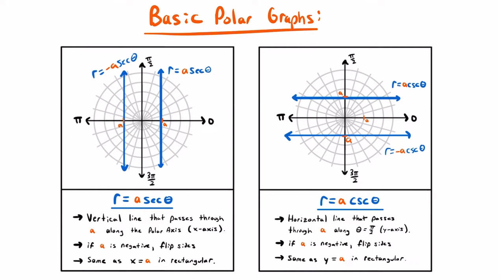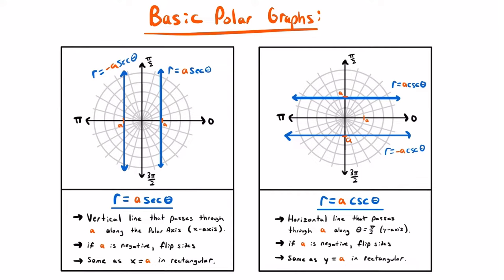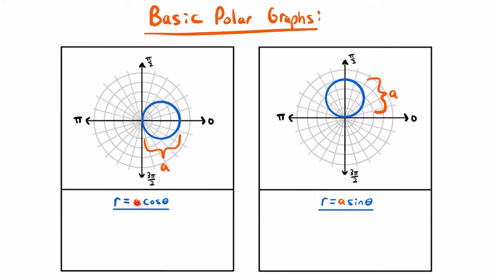Now we're going to look at two more basic polar graphs that involve circles. The first is represented by r equals some constant a times cosine theta. When you see this, you know you're working with a circle that has a diameter of a on the right side of the vertical axis theta equals pi divided by 2, centered along the polar axis. If that constant a is negative, the circle flips from being on the right side to being on the left side.